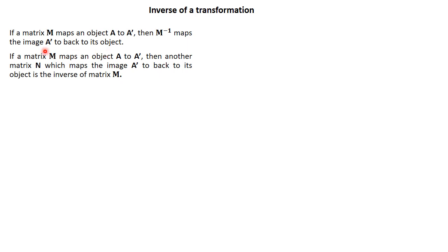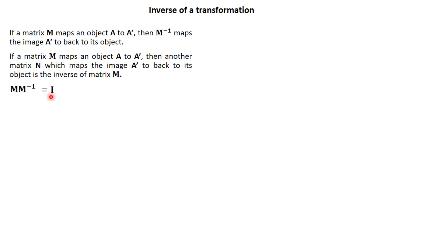If a matrix M maps an object A to A prime, and another matrix N maps the image A prime back to its object, then that other matrix is the inverse of M. In other words, M and N are inverses of each other. A matrix M times its inverse is normally equal to the identity matrix — that's [1, 0; 0, 1].